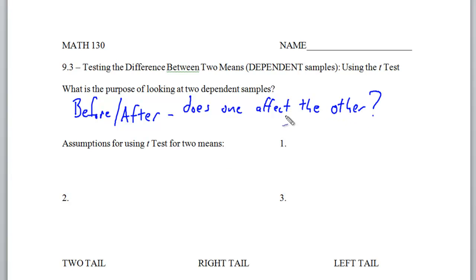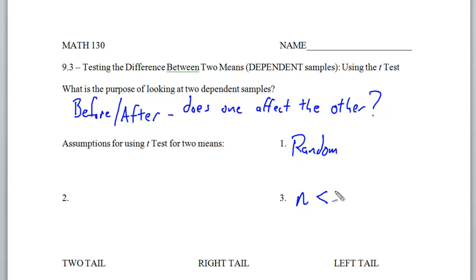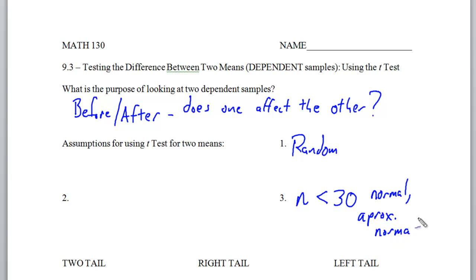Here are some assumptions for using the t-test for two means. First of all, you've got to have a random sample. And also, since we're doing the t-test, the sample size will be less than 30. Your distribution should be normal or approximately normal. And in this case we are also going to have dependent groups.